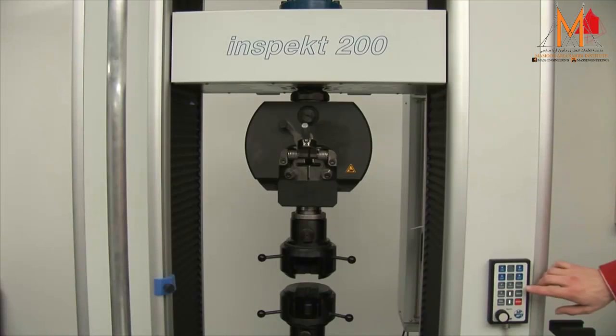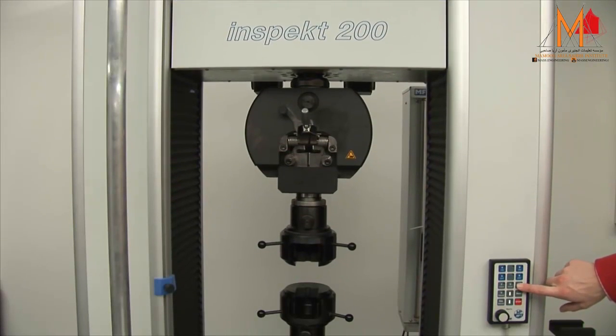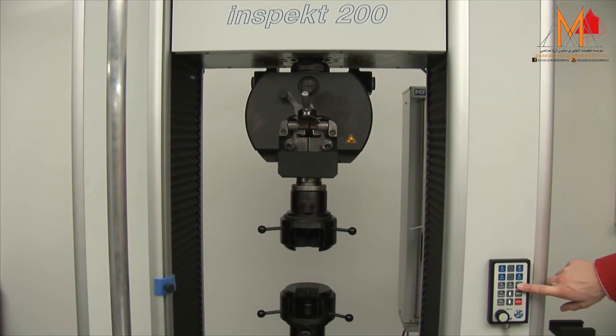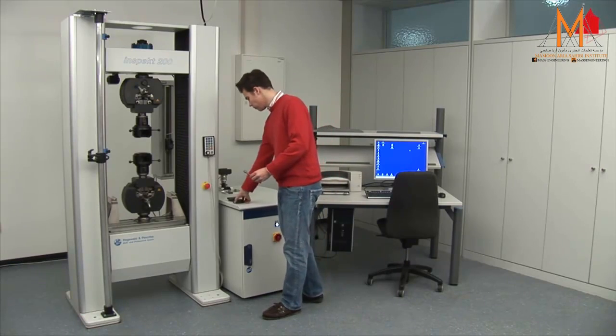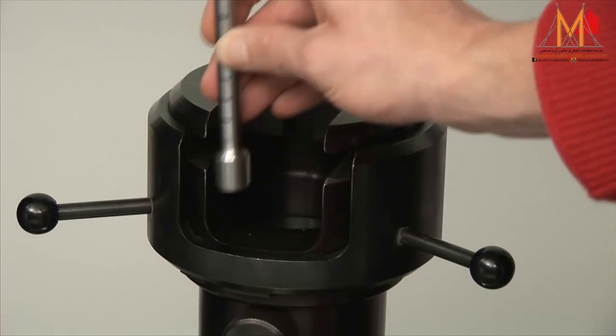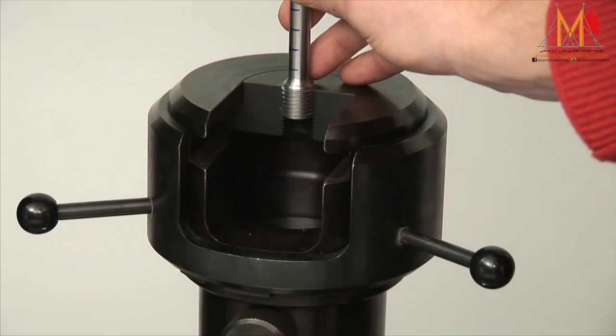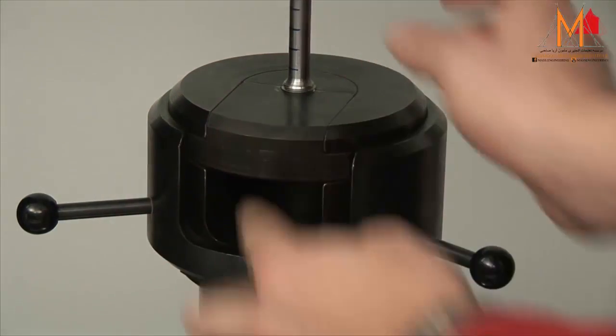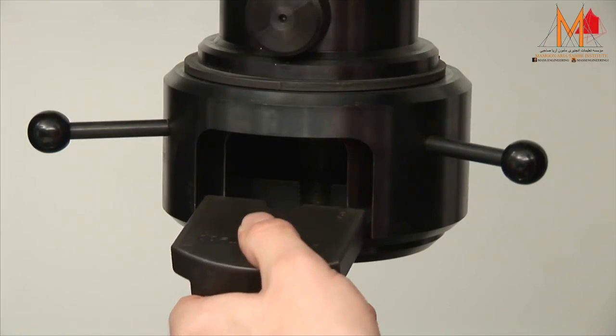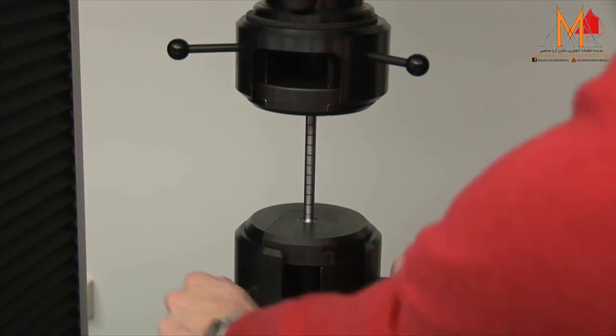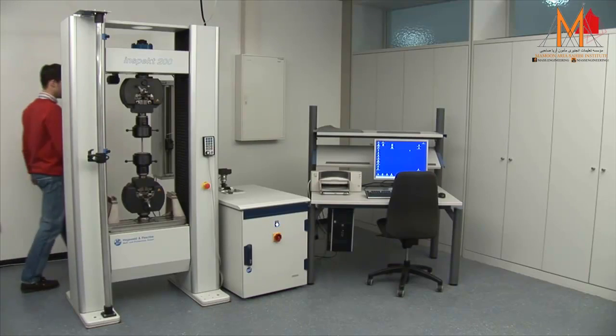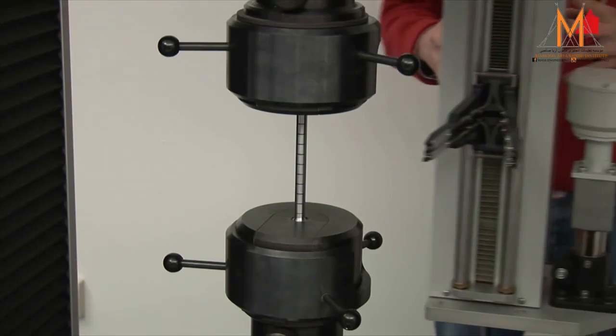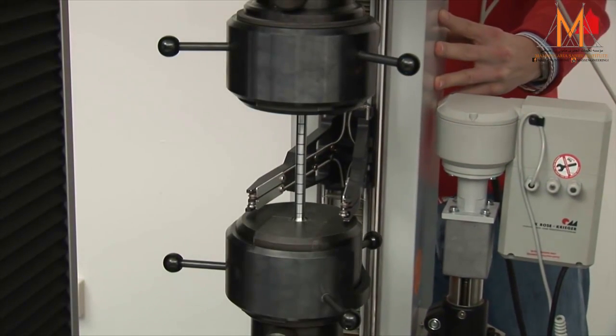Using a hand control, the tester moves the upper crosshead into its correct starting position. Now he can place the threaded ends of the test piece in the lower and upper grips of the testing machine. In the next step, he swings the extensometer into its working position and checks that everything is correctly prepared.